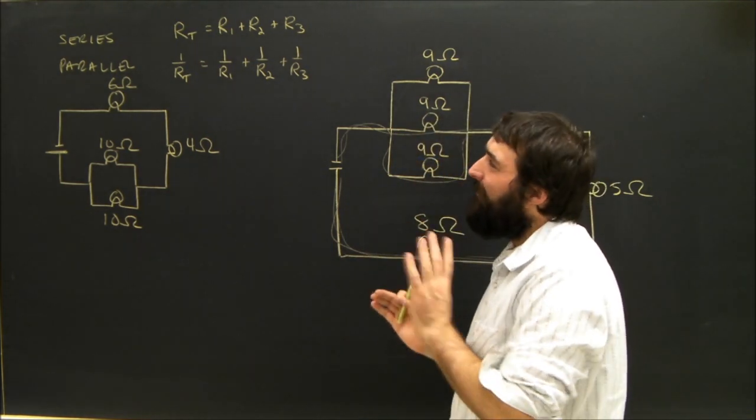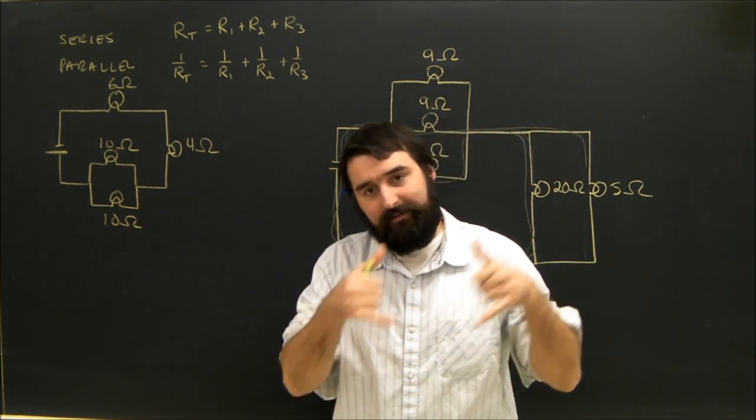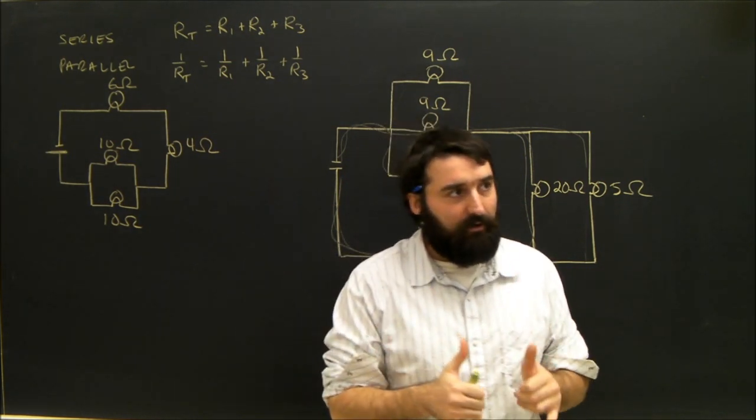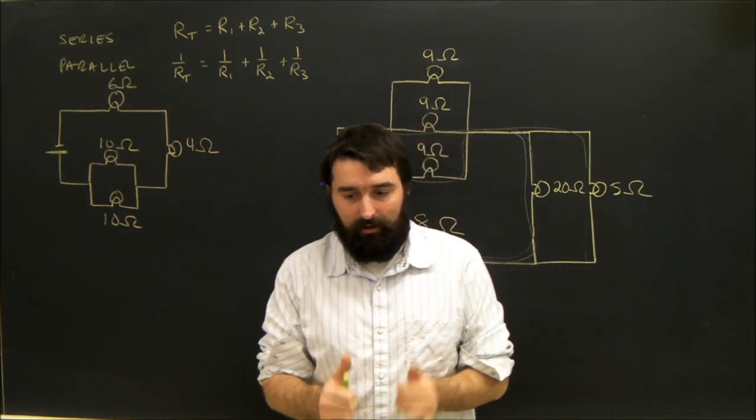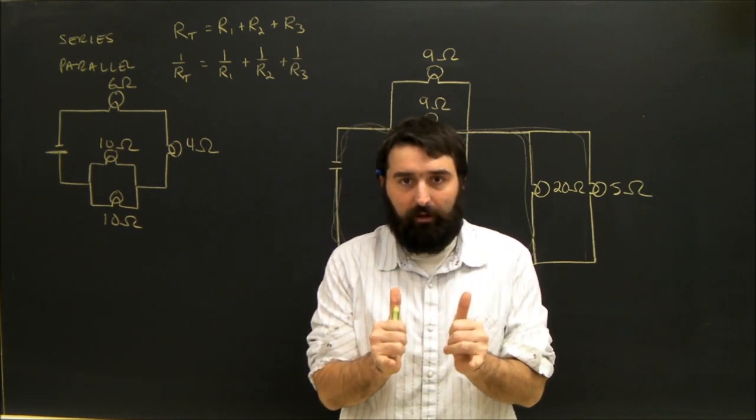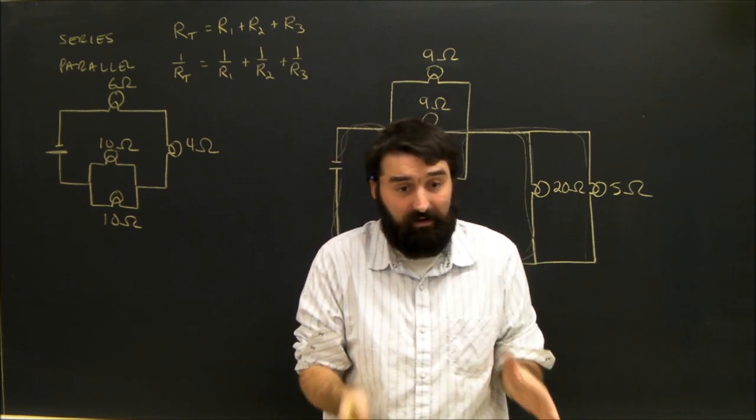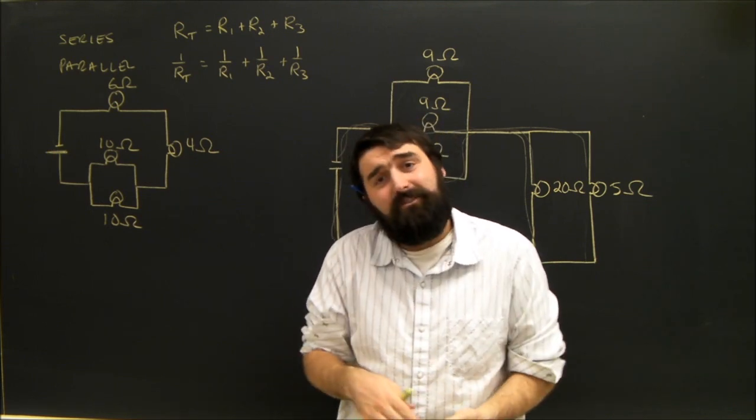And what's a little less obvious is the parallel, that when you connect things in parallel, the total resistance actually goes down. But if you think about it, it does make sense. If we have two resistors in parallel, electrons can go through this one or that one, so half of them can go here, half of them can go there, and the total resistance actually goes down.